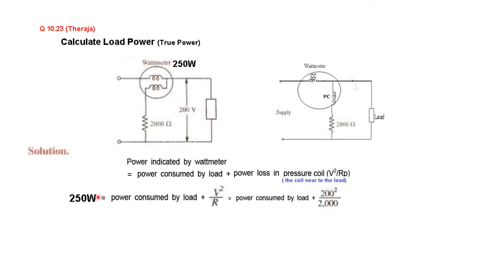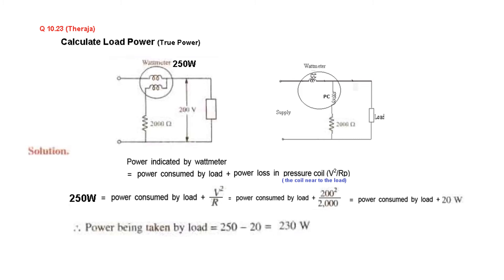The wattmeter reading is 250 W, equal to load power plus V² / R_p. Here V is 200 V and R_p is 2000 Ω, so the power consumed by the potential coil is 200² / 2000 = 20 W. Therefore, the power consumed by the load is 250 − 20 = 230 W.